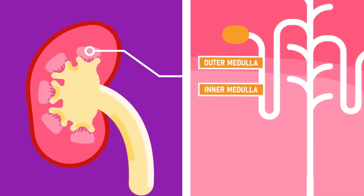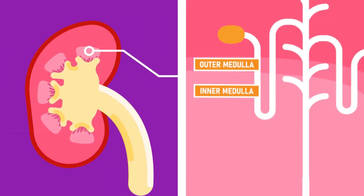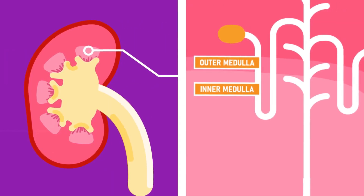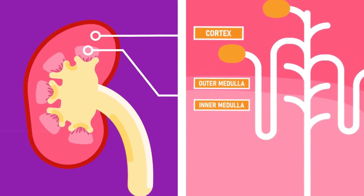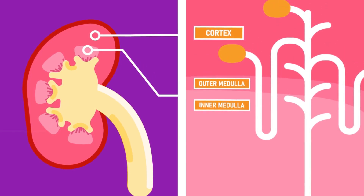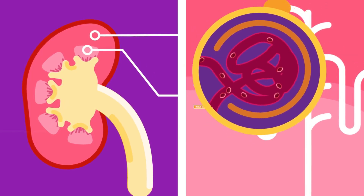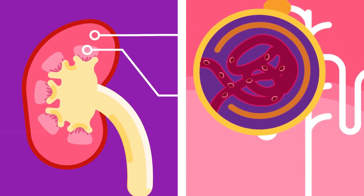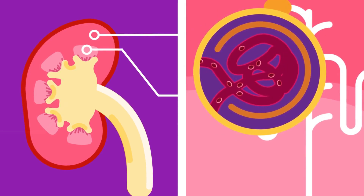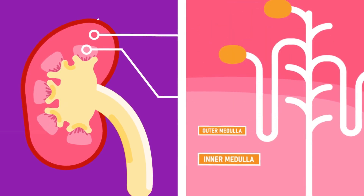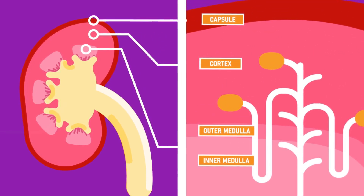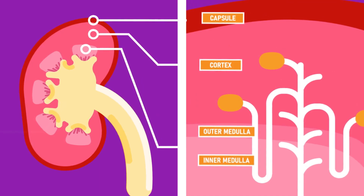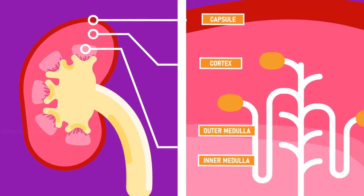The inner medulla is lighter in colour and contains loops of Henle and the collecting ducts. The outer cortex contains Bowman's capsule and glomeruli. It is dark brown due to the large network of blood capillaries from the glomeruli. All of those are covered by the capsule, a thin transparent membrane that surrounds the kidney.